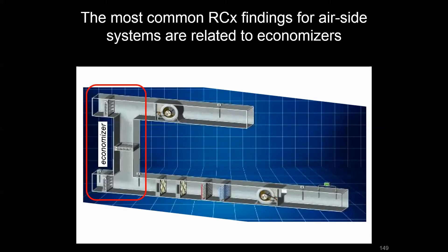There's really no greater poster child for systems gone wrong than some of our economizers out there. They're very prone to failure, and before we go into what the problem is on that system, we should talk about what we want these economizers to do. So what's a perfect economizer?